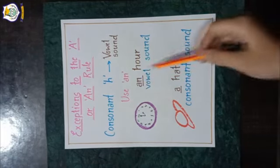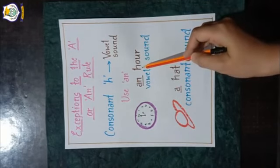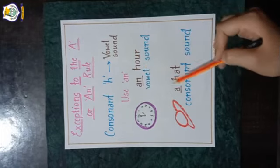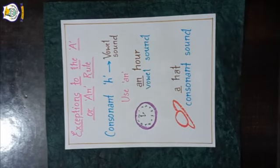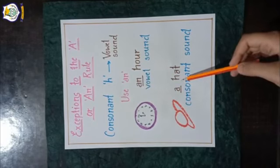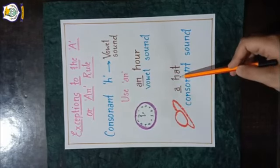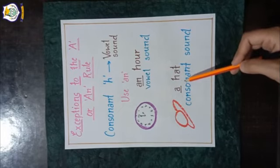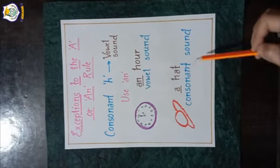In the word 'hour', the 'h' is silent — it begins with a vowel sound 'a' (as in 'our'). So we use 'an' before such words: 'an hour'. The word 'hat' also begins with consonant 'h', but here the 'h' is sounded — 'her', 'hat'. It has a consonant sound, so we use 'a' before it: 'a hat'.